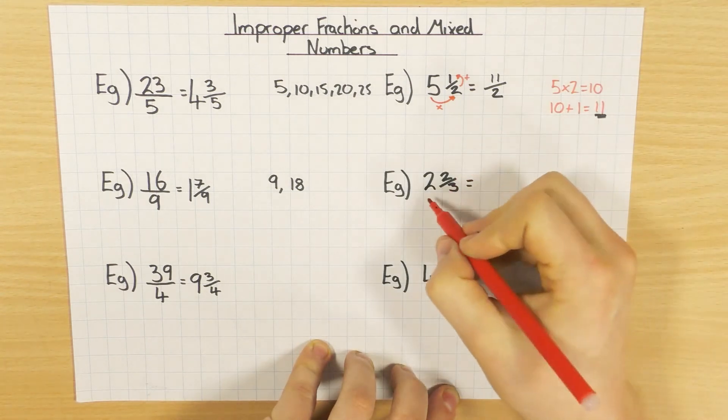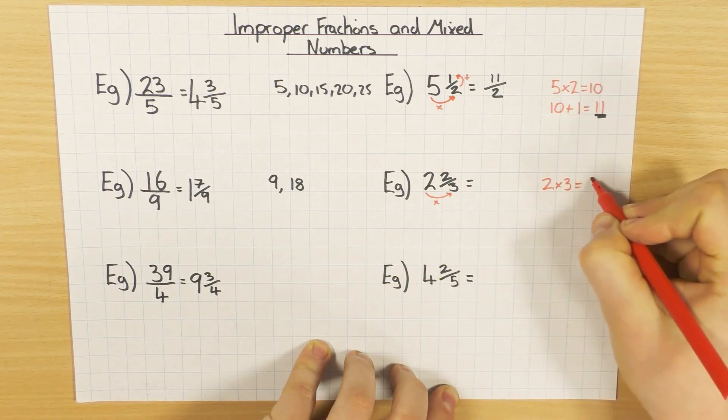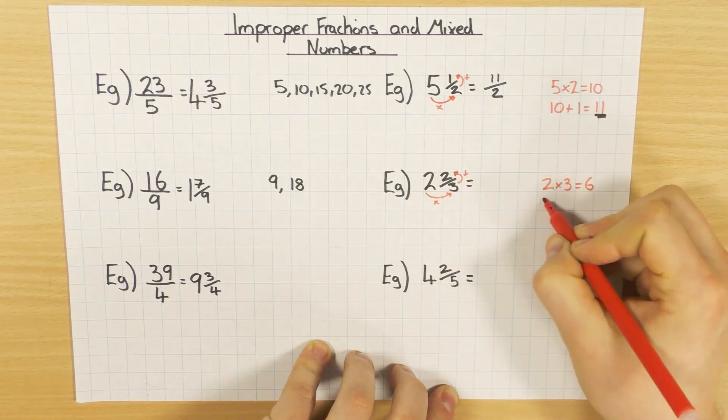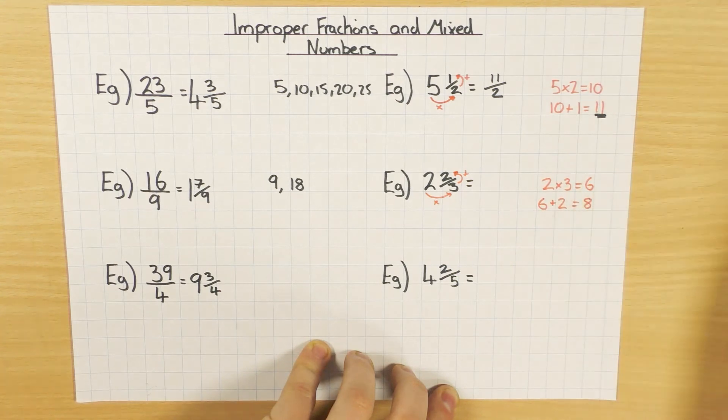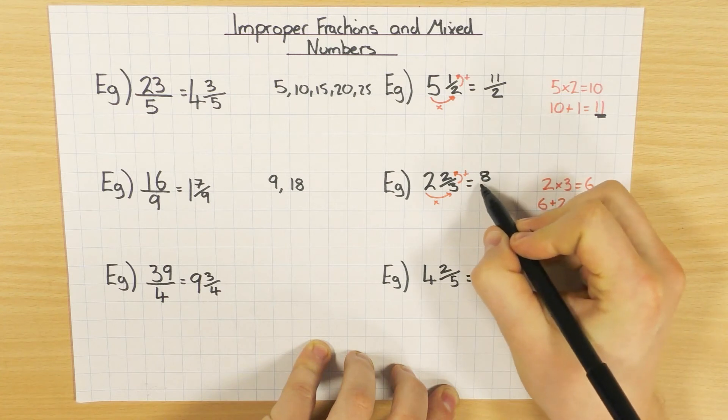Let's have a go at this one. 2 times 3, so 2 times 3 is 6. Add the top number, so 6 plus 2 is 8. And again, that's your numerator, your top number is 8. And then your denominator is the same, so it's 3.